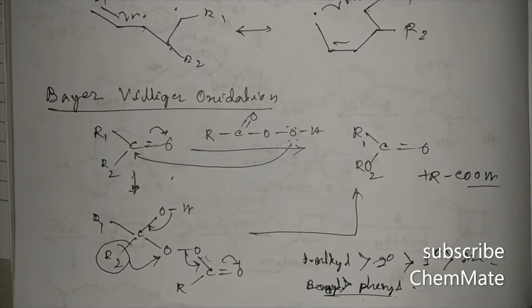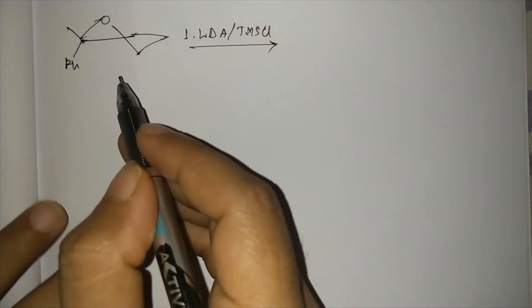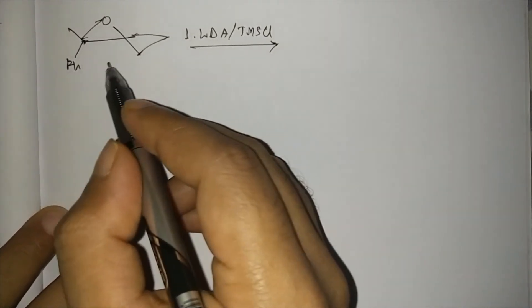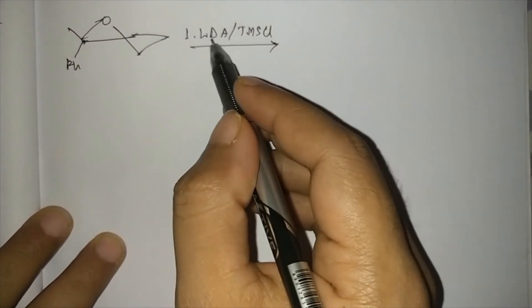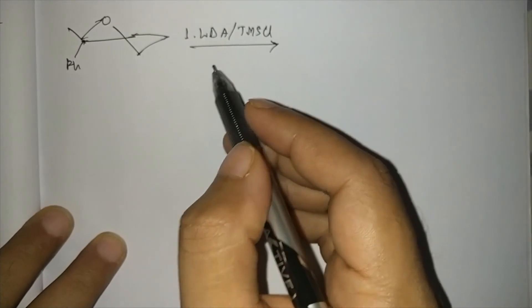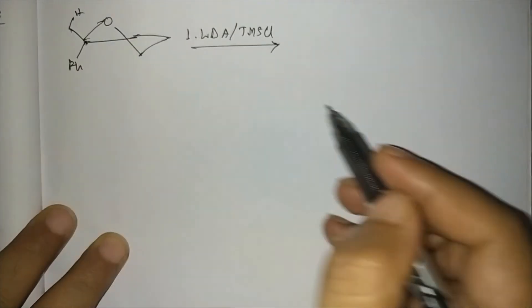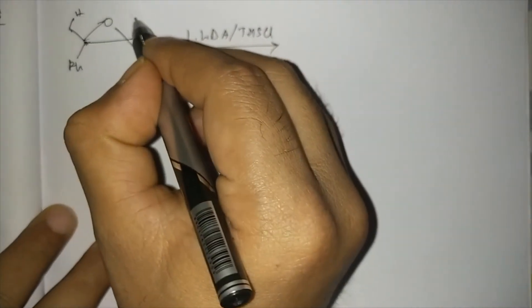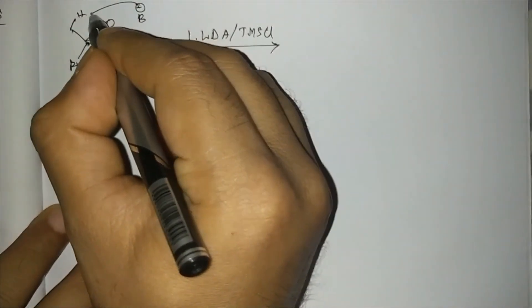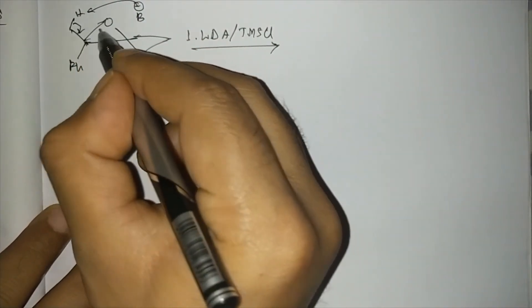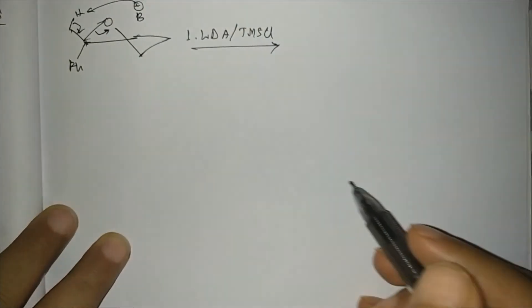Now we'll discuss the reactions. So if this oxaspiro [2,2] pentane system is treated with LDA, that is a strong base, it will abstract a proton from this methyl. So this will abstract this proton and this type of ring opening reaction will take place.